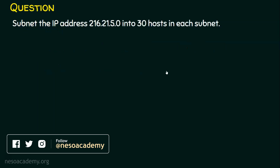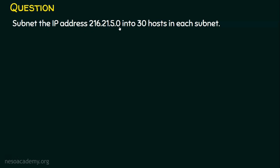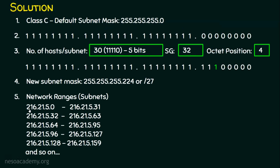I hope you can recollect this question, which we solved in the previous lecture: subnet the IP address 216.21.5.0 into 30 hosts in each subnet. We got the answer that the first subnet will be from 216.21.5.0 to 216.21.5.31, the second subnet from 32 to 63, the third from 64 to 95, and so on. The new subnet mask is 255.255.255.224, migrating from a classful to a classless network. Let's verify this using Cisco Packet Tracer.